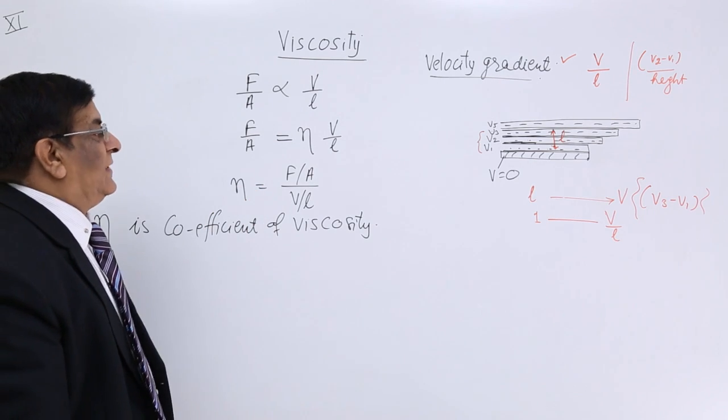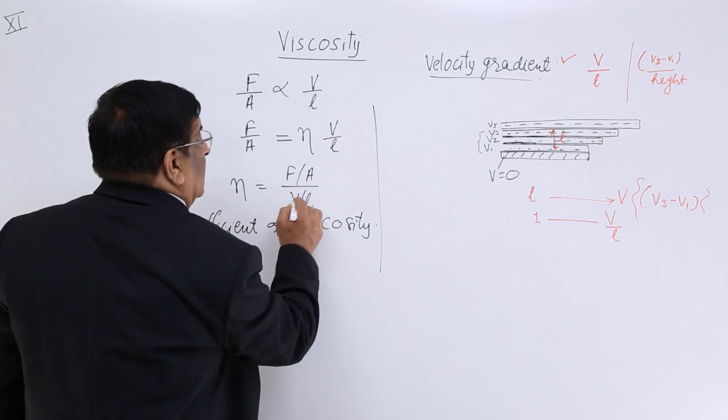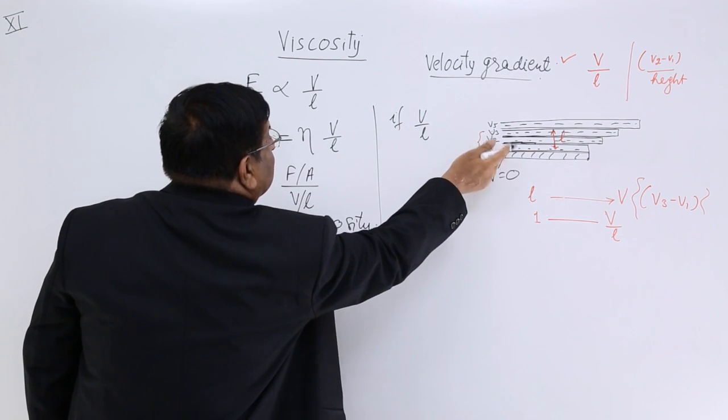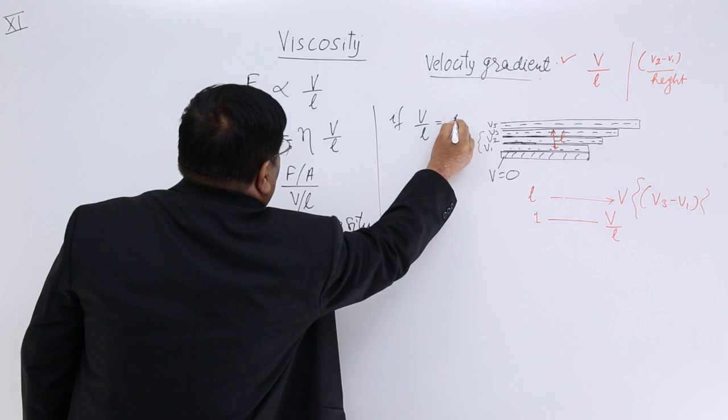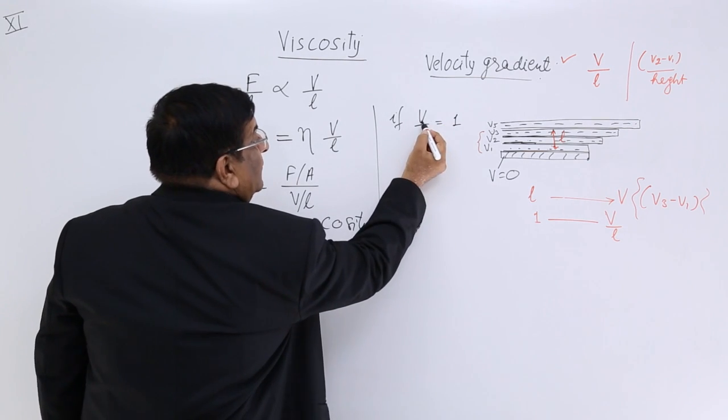Now, can we define this? What is the meaning of coefficient of viscosity? Answer is yes. See, if V upon L, that is velocity gradient, is equal to 1, what should be its unit? Wonderful. V, velocity, meter per second.